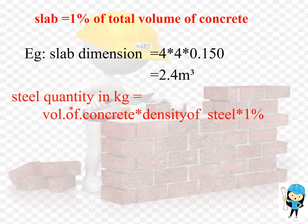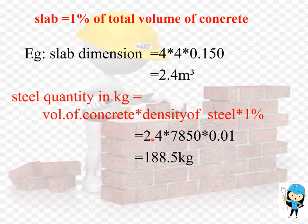The formula to calculate the steel quantity in kg is: volume of concrete × density of steel × percentage. That is 1% for slab, 2% for beam, and 0.8% for footing. We know the volume of concrete is 2.4 m³. The standard density of steel is 7850, and 1% is written as 0.01. By multiplying these three factors we get the quantity of steel as 188.5 kg.